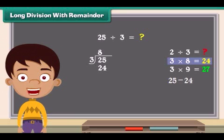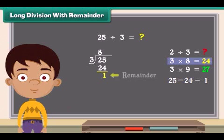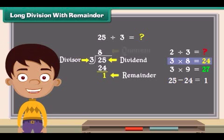25 minus 24 is 1. We can see 3 cannot divide 25 as we get a remainder as 1. Here 25 is dividend, 3 is the divisor, 8 is the quotient, and remainder is 1.